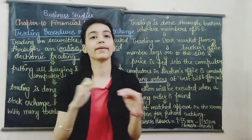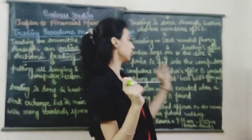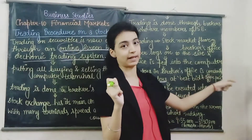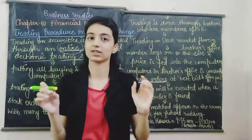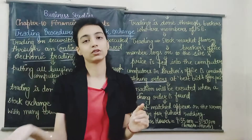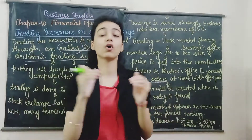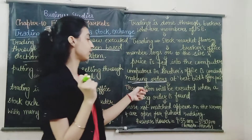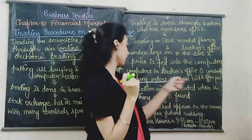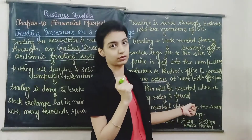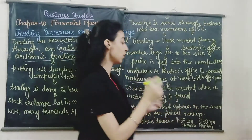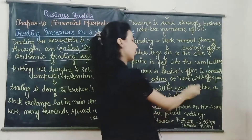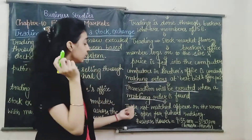The order is placed at the best bid and offer price, meaning the best available price. Then the order executes. Transactions are executed when a matching order is found — so when a matching order is found, the transaction will execute.